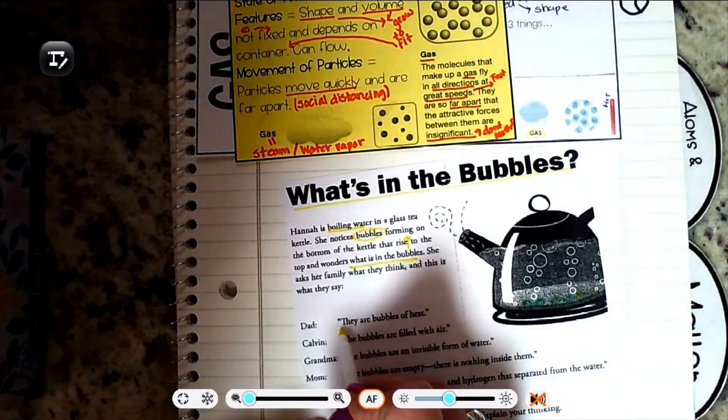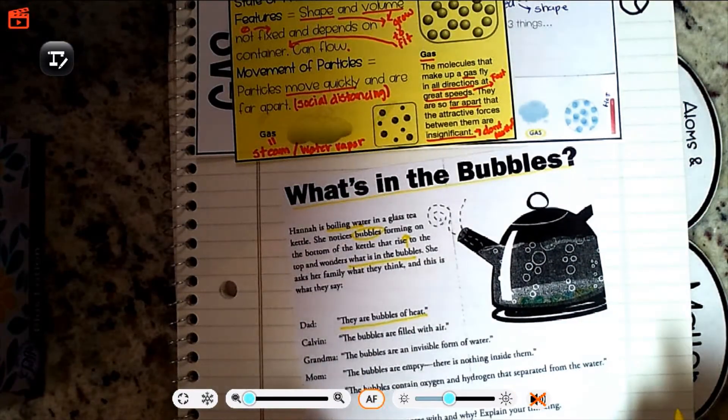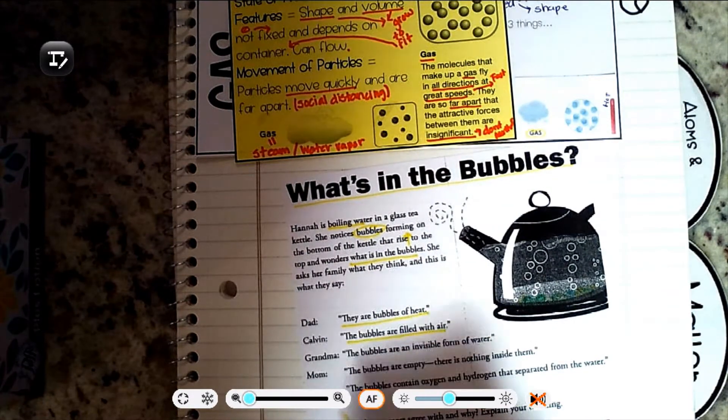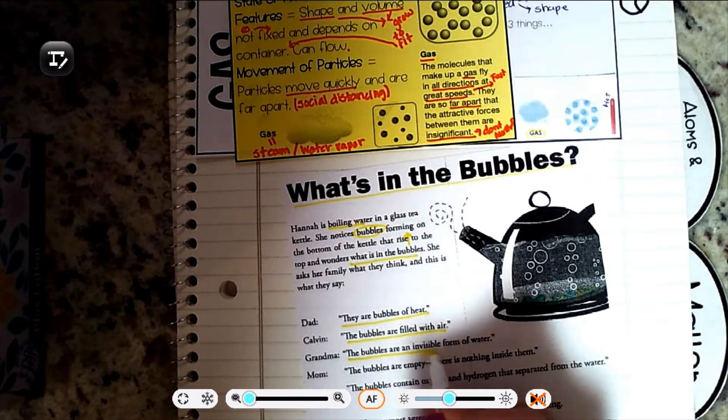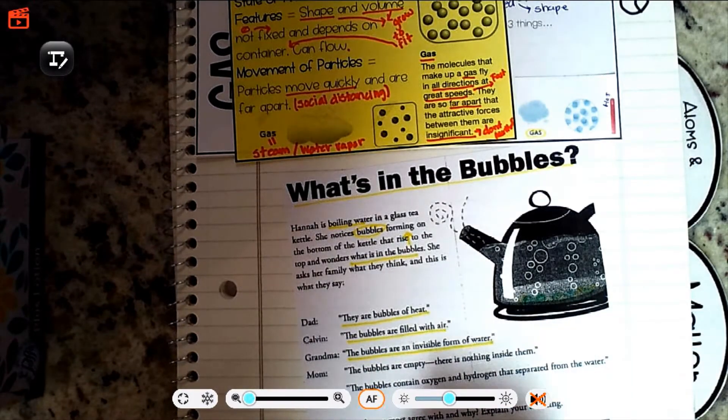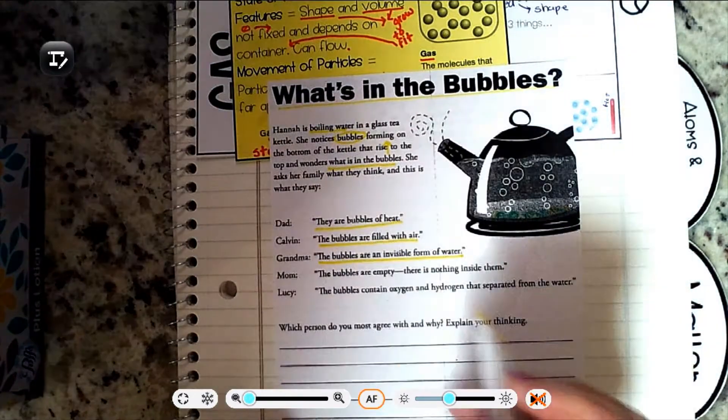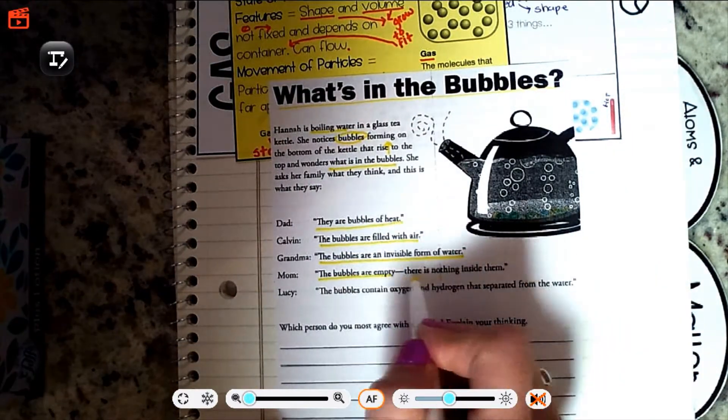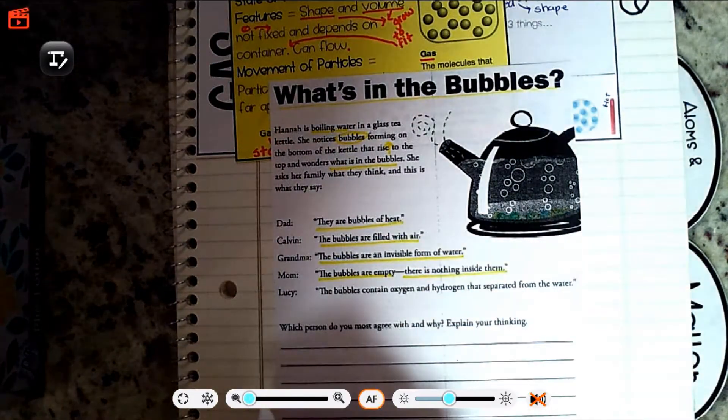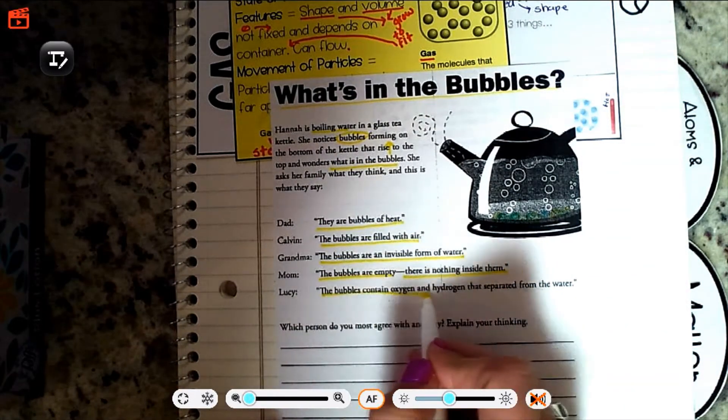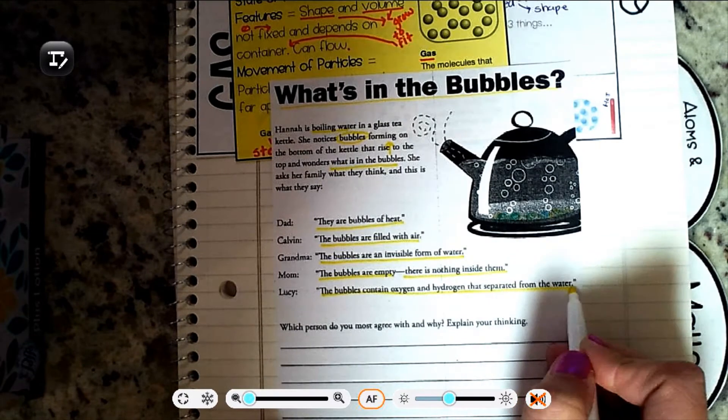Dad says they are bubbles of heat. Calvin says the bubbles are filled with air. Grandma says the bubbles are an invisible form of water. Mom says the bubbles are empty. There is nothing inside them. Lucy says the bubbles contain oxygen and hydrogen that's separated from the water.